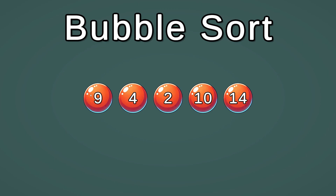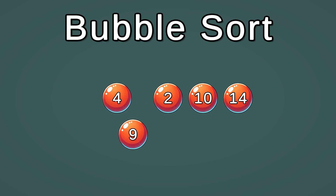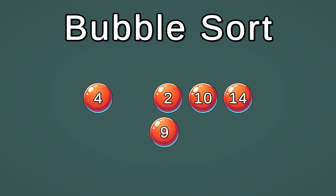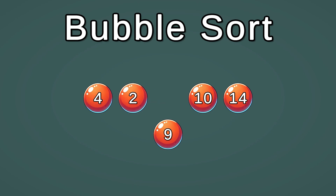So now we do another pass. 9 and 4 are in the wrong position, so we swap those. Then 9 and 2 are in the wrong position — swap. Now 9 is in its final position.